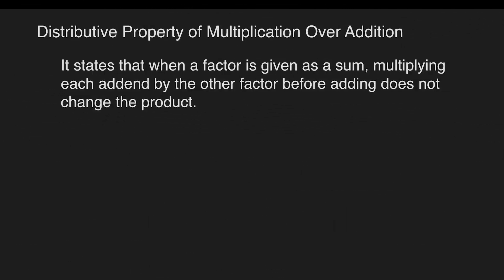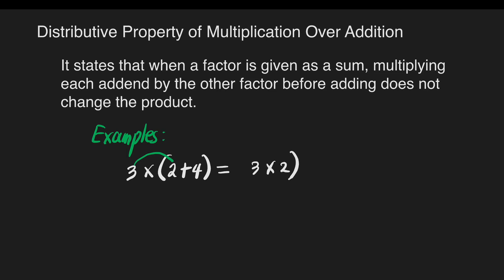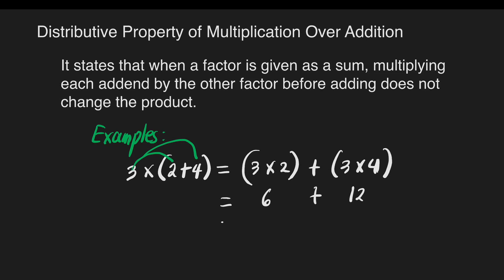We have the last one: distributive property of multiplication over addition. It states that when a factor is given as a sum, multiplying each addend by the other factor before adding does not change the product. Example: we have 3 times the quantity of 2 plus 4. We can distribute: 3 times 2 plus 3 times 4. That gives us 6 plus 12, which equals 18.